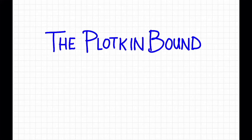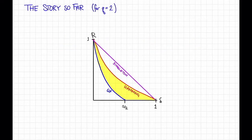In this video we'll see one more impossibility result known as the Plotkin bound. So here's the story so far, at least for q equals 2, at least for the trade-off between rate and distance.